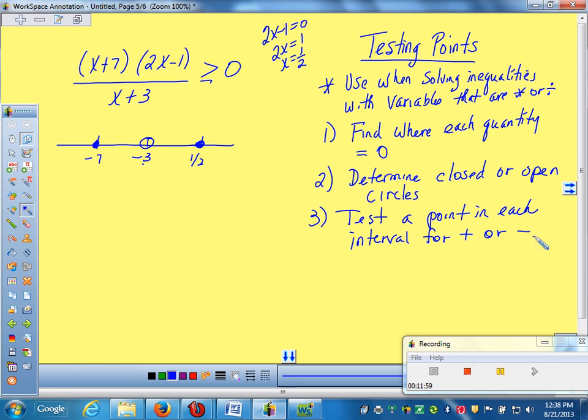So you need to pick a number below negative seven. Any number below negative seven. Negative nine. So if we pick negative nine, if you put in each term here, what's negative nine plus seven going to turn out to be? Negative. You only really need to know it's going to be negative. So I'm going to get a negative.